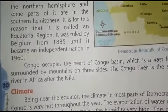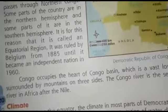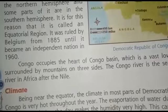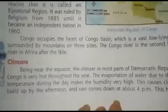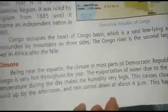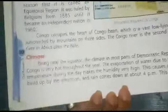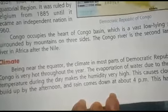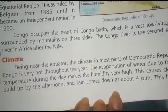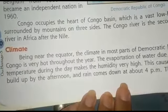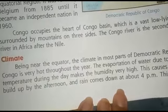Regarding the climate, being near the equator, the climate for most parts of the Democratic Republic of Congo is very hot throughout the year. The evaporation of water due to high temperatures during the day makes the humidity very high. This causes clouds to build up in the afternoon and rain comes down around 4 pm.